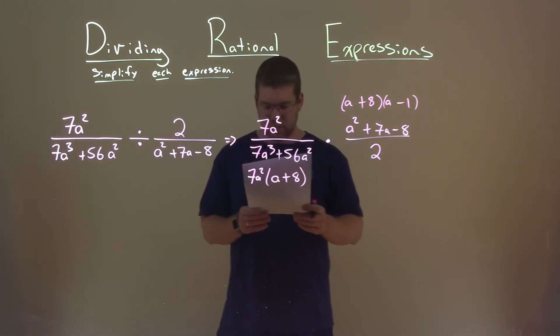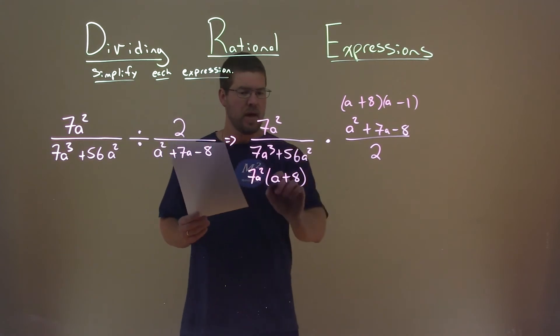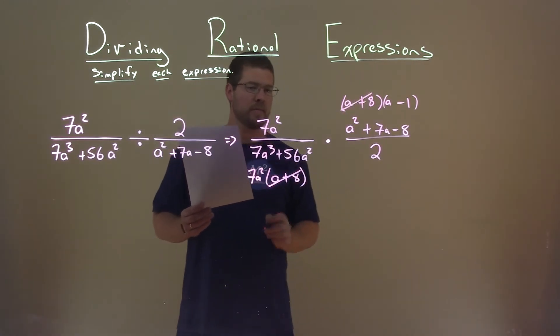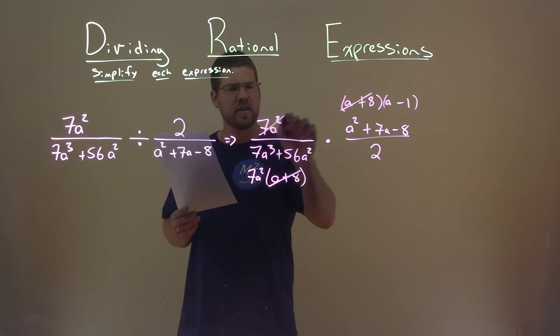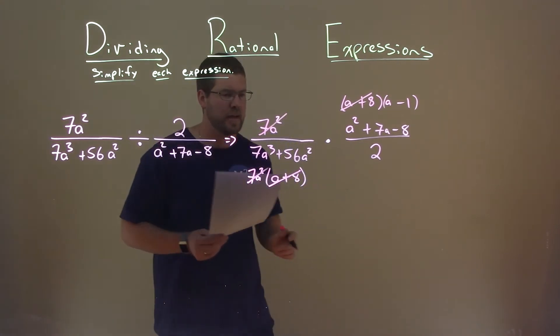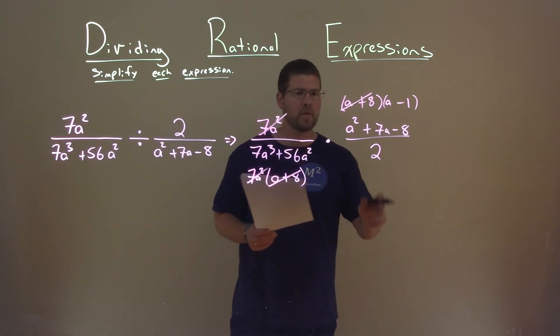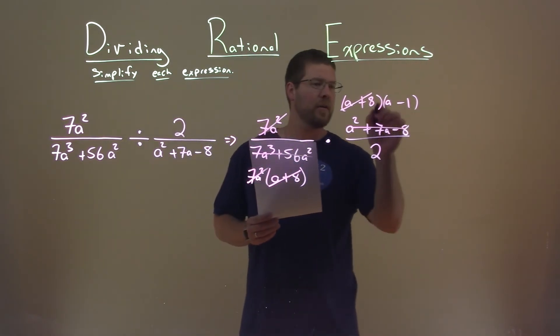So now we're going to try to cancel where we can. I see an a plus 8 here in the numerator and denominator, they can cancel out. I also see a 7a squared and a 7a squared. And remember, these are replacements when we factored it out here.